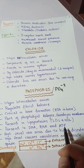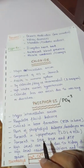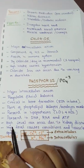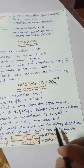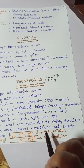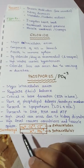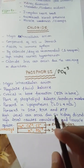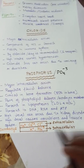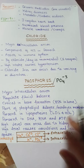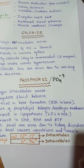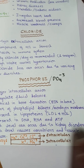Phosphate is present in DNA and RNA as phosphodiester linkages, and in ATP. High levels of phosphate can occur due to kidney disorders and cause convulsions and muscle spasms. In summary, the major electrolytes we studied are sodium, calcium, chloride, potassium, and phosphate.